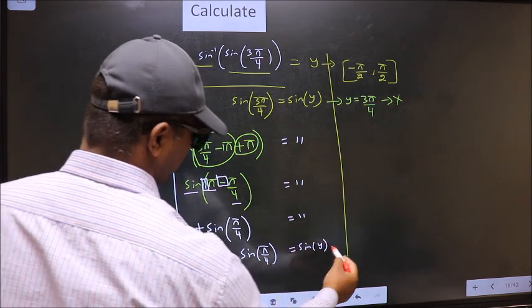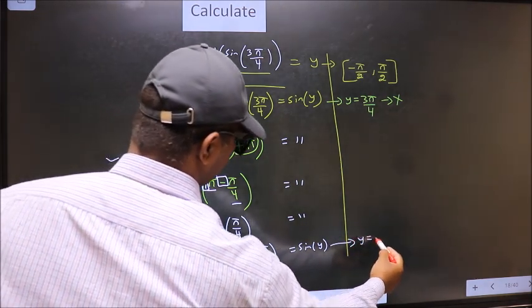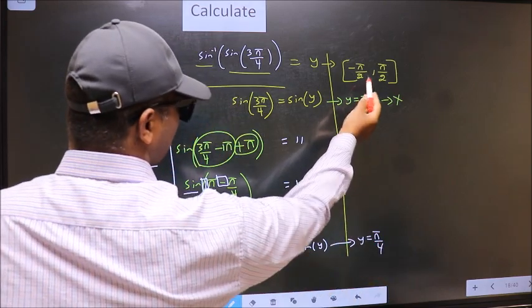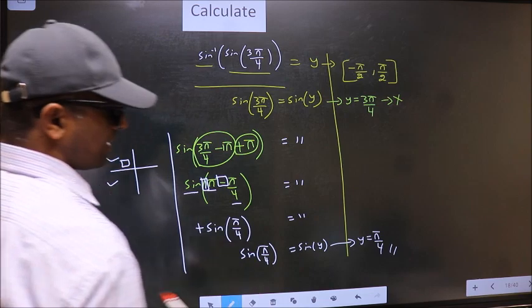Now comparing both sides we get y to be π by 4. Does this lie in this interval? Yes. So this itself is our answer.